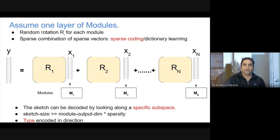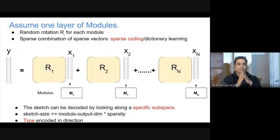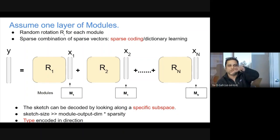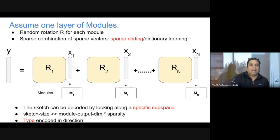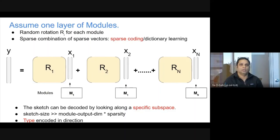How would you remember this as a sketch — compact representation? It's very simple: you use a random rotation matrix for each module. This random rotation matrix is fixed and pre-decided for each module. You hit each output vector with this random rotation matrix, rotating it and putting it in a random direction, then add these up — that is your final sketch. If you have a couple of such non-zero modules, the output dimension of Y needs to be just a little more than twice the dimension of each XI. Information-theoretically, you have all the information in Y to exactly figure out all the Xs — specifically, which modules fired and with what values. This is due to sparse recovery and sparse encoding.